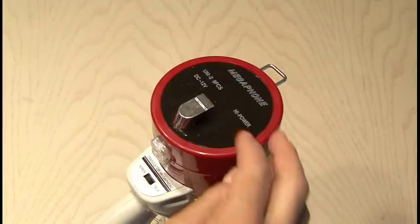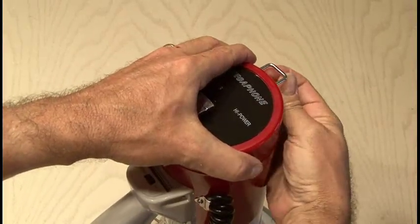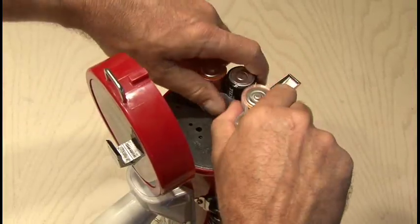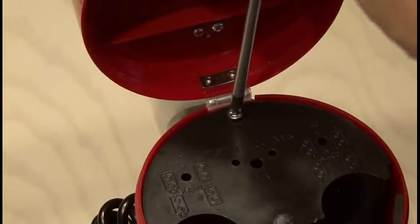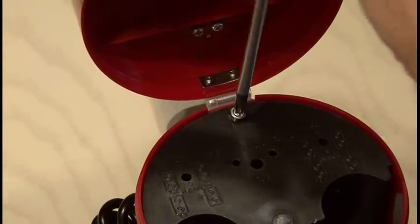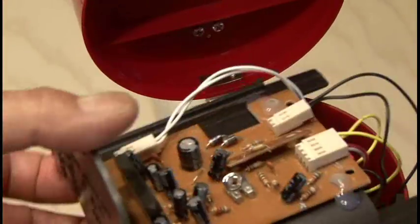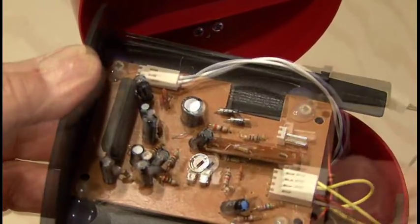The first step is to disassemble the megaphone. Remove the microphone from the bracket, open up the battery compartment and remove the batteries, and then there's a single screw that removes the battery assembly and circuit board. Unplug the three connectors attached to the circuit board.